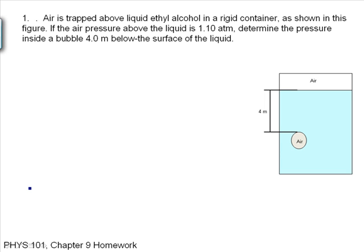Okay, this is Chapter 9 Homework for Physics 101. It says air is trapped above liquid ethyl alcohol in a rigid container, as shown in this figure. The air above the surface of the liquid is 1.1 atmosphere, so I have a pressure up here. I'll call this p-naught. It's equal to 1.1 atmospheres. I want to know what is the pressure inside this bubble.